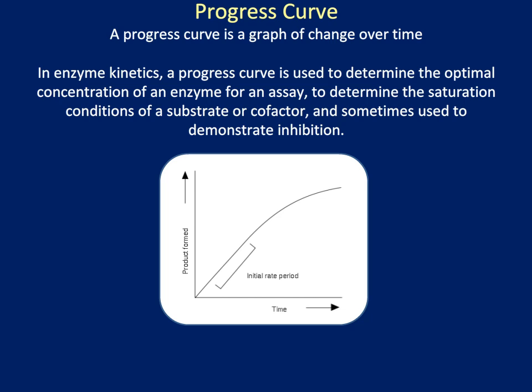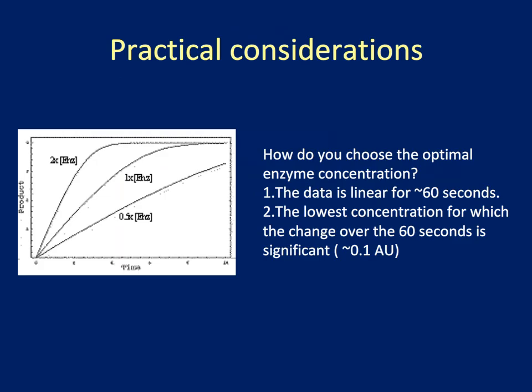This graph shows a typical progress curve in which the line represents product forming over time. We would only use, or are interested in, initial rates, in which we are looking for a linear progress curve. Here is a progress curve that one might expect when changing enzyme concentration and monitoring product over time. At lower enzyme concentrations, the graph of product over time is linear. As the enzyme increases, a plateau is observed earlier and earlier in the time course. The reason you do this progress curve is to optimize the data that you acquire for all of your experiments to generate the Michaelis-Menten curve.